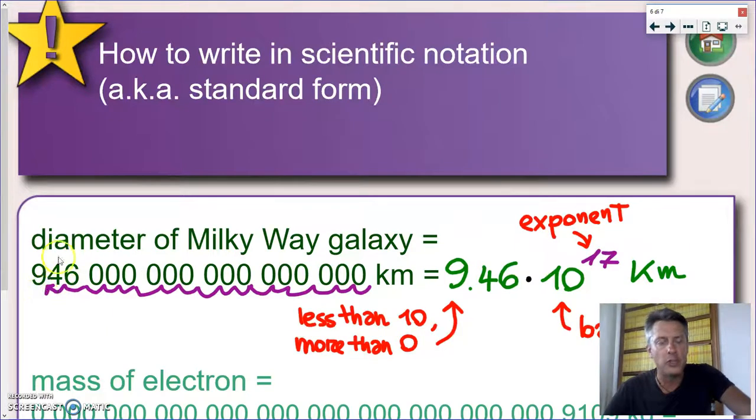And now what we're going to do, I'm going to transform this in a number multiplied by the power of 10. But how do I do this? Now, the first rule you have to remember, a number in scientific notation starts with a digit, a non-zero digit, which has to be less than 10. So I should have said a number, not a digit, less than 10, and more than 0.